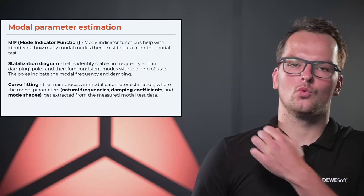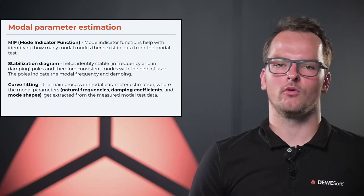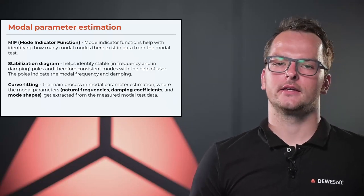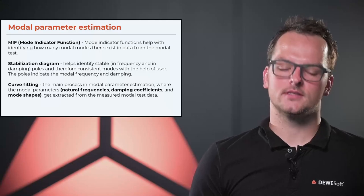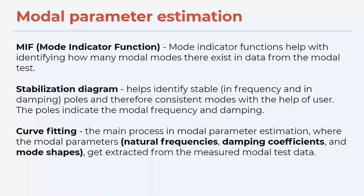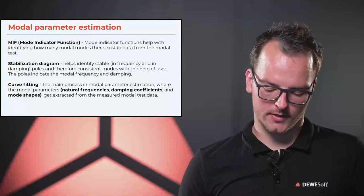We do the modal parameter estimation with the help of a mode indicator function that helps identify how many modes are in our measured data. We also have the stabilization diagram that helps identify stable poles — poles that are stable in frequency and in damping. The user must select these poles. Then we have curve fitting, which is the main process in modal parameter estimation, where modal parameters such as natural frequencies, damping coefficients, and mode shapes get extracted from measurement data.